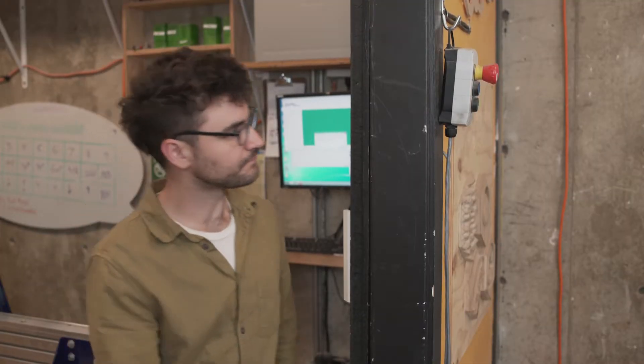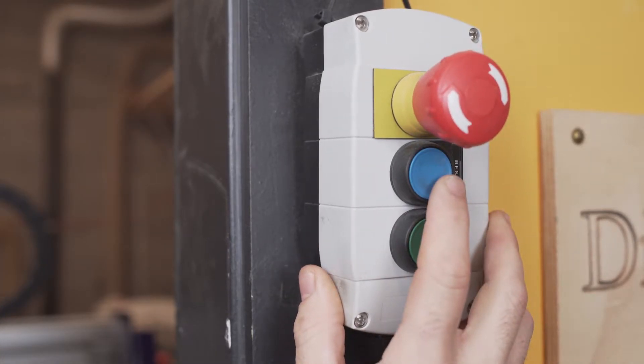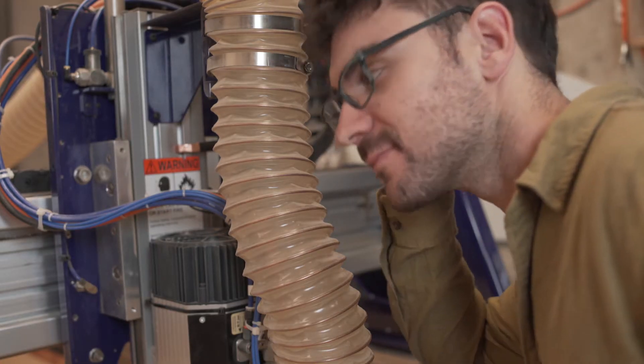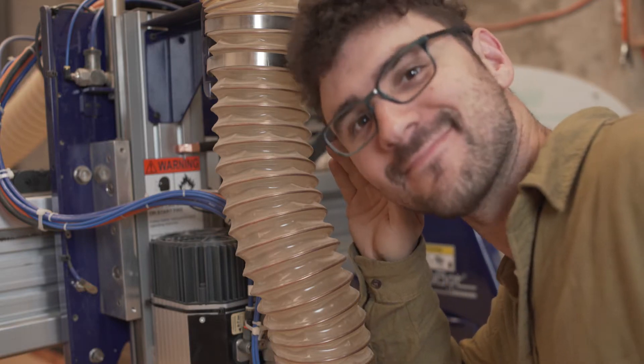Now press the blue reset button on the e-stop pendant. This resets and activates the ShopBot motors. You'll know the motors have been reset when you hear the spindle fan turn on.